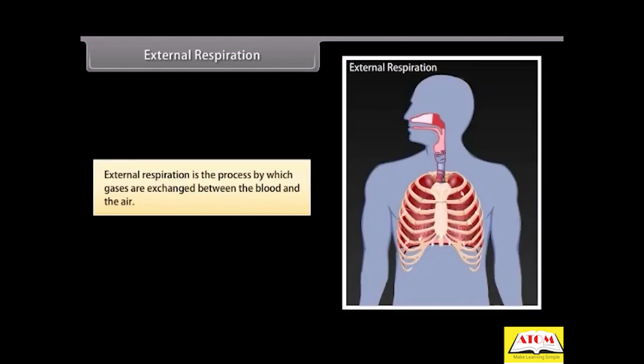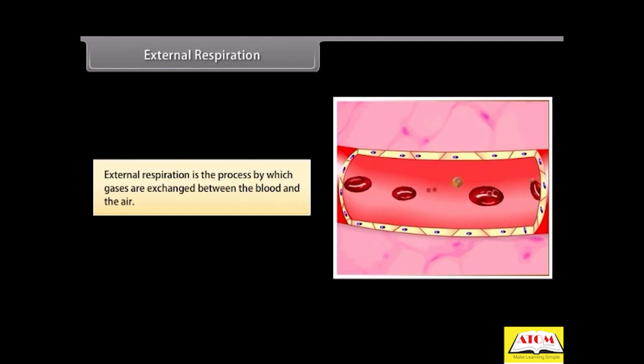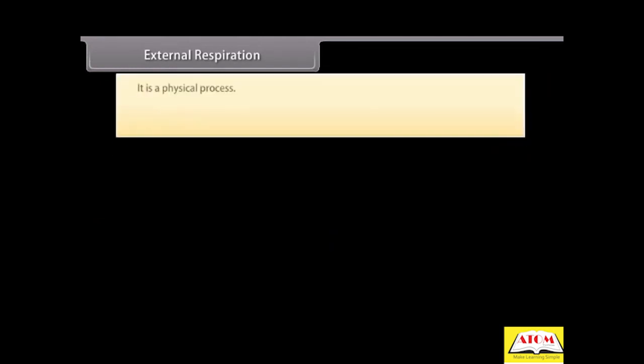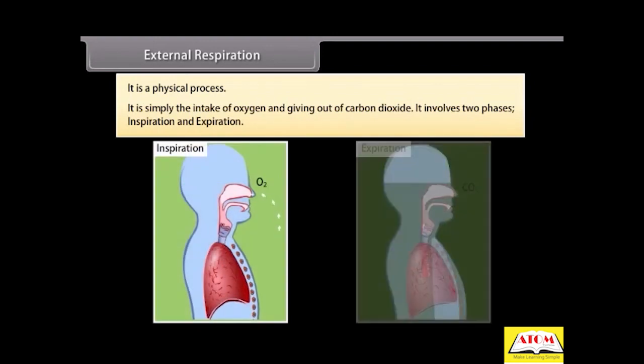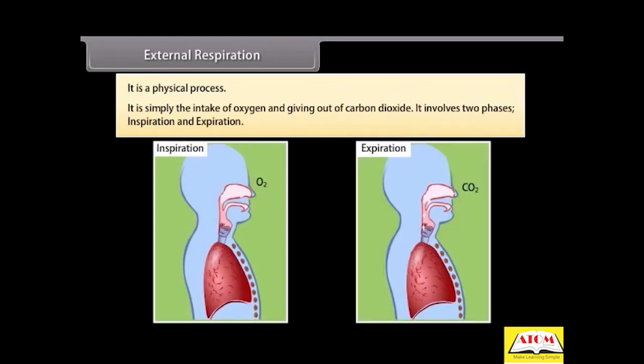External respiration. External respiration is the process by which gases are exchanged between the blood and the air. It is a physical process, simply the intake of oxygen and giving out of carbon dioxide. It involves two phases: inspiration and expiration.